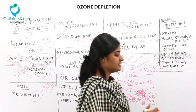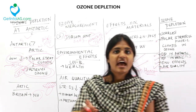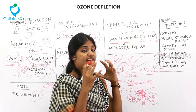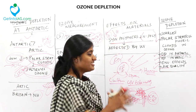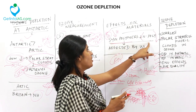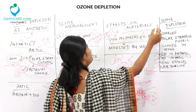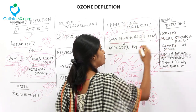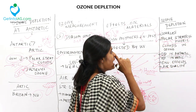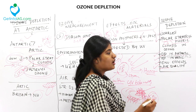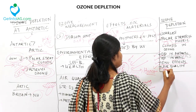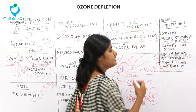Finally, the effects on materials: synthetic and natural polymers are very susceptible to UV radiation. When there is no ozone layer in the stratosphere, it directly affects these polymers. To summarize, under ozone depletion we covered the sources, polar stratospheric clouds and their three types, ozone depletion in Antarctic and Arctic, environmental effects, and air quality. Thank you for watching.